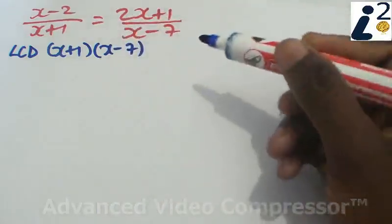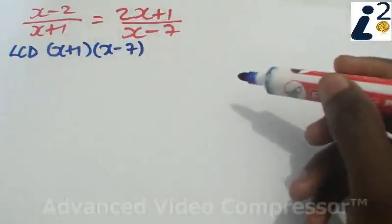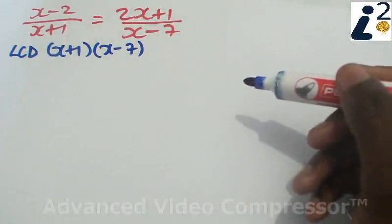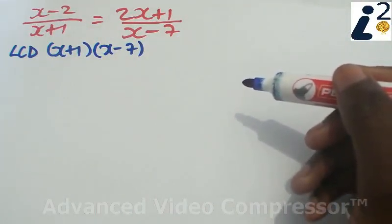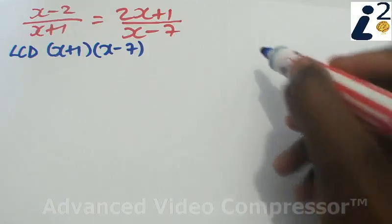So we take the LCD and we multiply it throughout the equation by the LCD. Multiplying throughout means that you have to multiply everything on the left hand side of your equation by the LCD and also everything that's on your right hand side by your LCD.